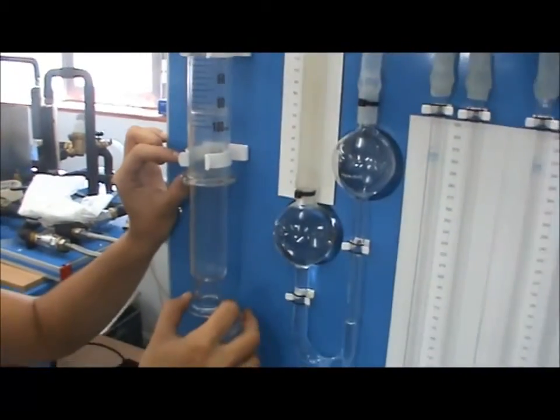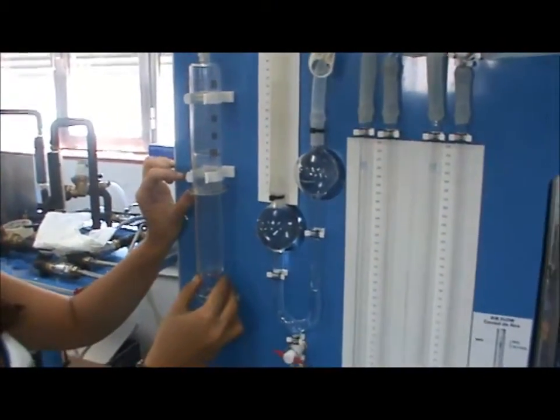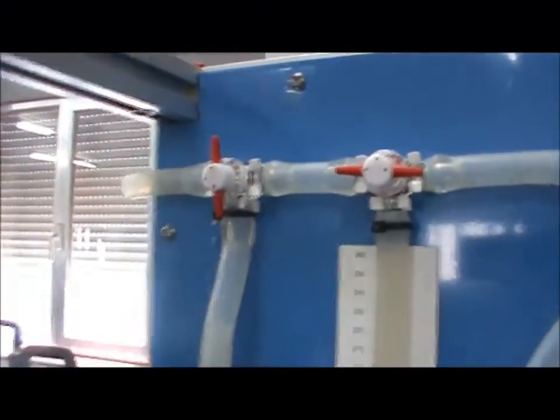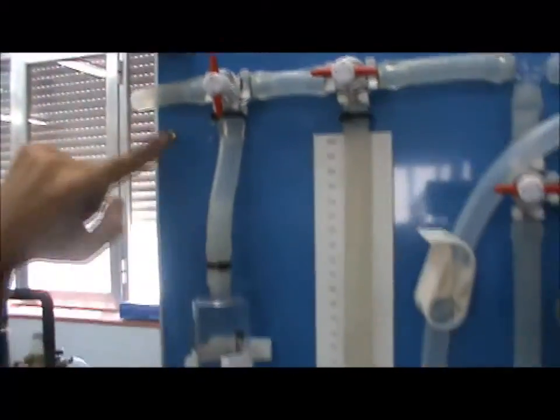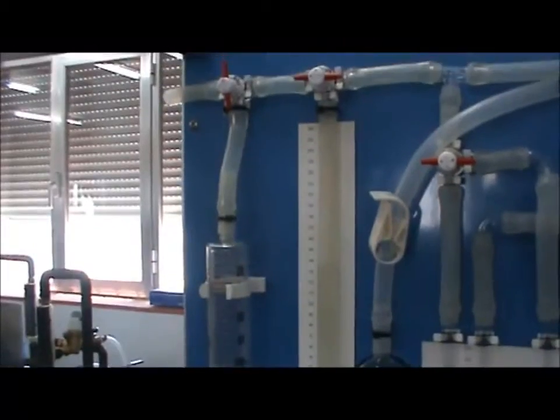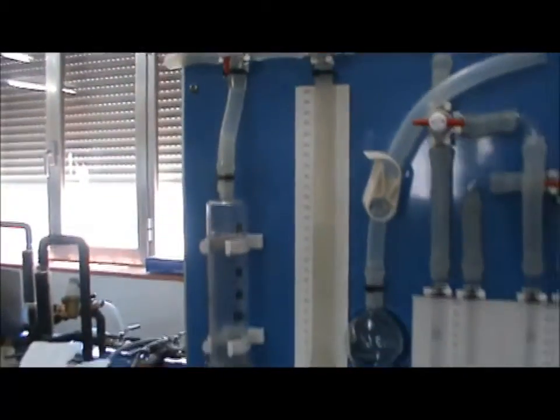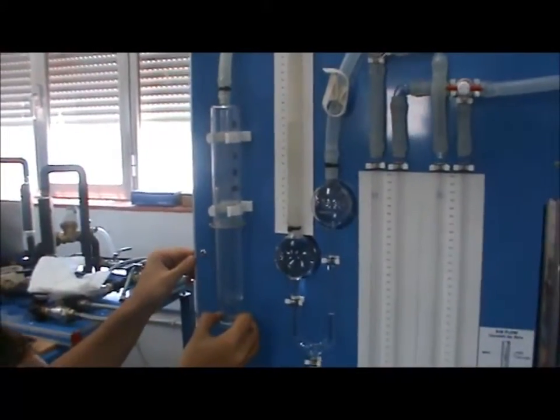Now, push the plunger down, drawing the air mixture from the column into the syringe. Turn valve VT3 to expel the sample to the atmosphere. Repeat these steps five to six times to clear the lines and to ensure that the sample is representative of the mixture in the column.